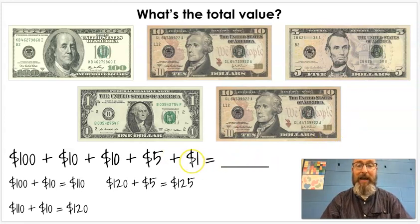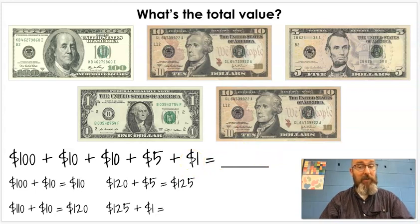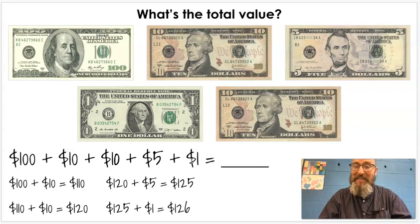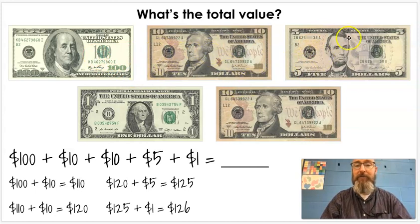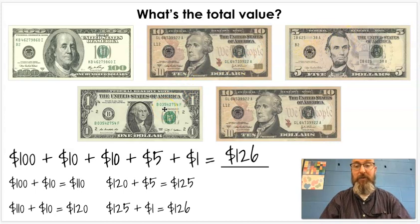And we only have one more to add. That's our one-dollar bill. $125 + $1. What comes after one-hundred-twenty-five? One-hundred-twenty-six. So, we know the total value of all these dollar bills, the one-hundred, the two ten-dollar bills, the five-dollar bill, and the one-dollar bill is one-hundred-twenty-six dollars.